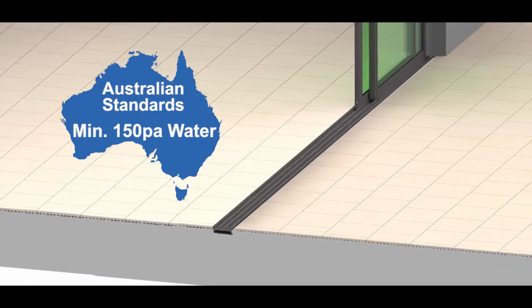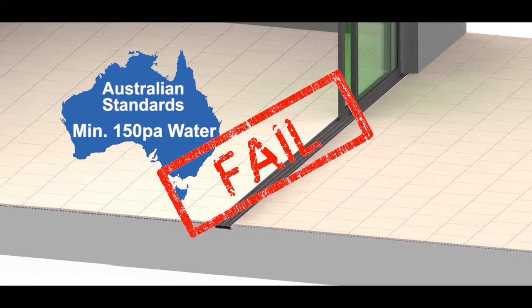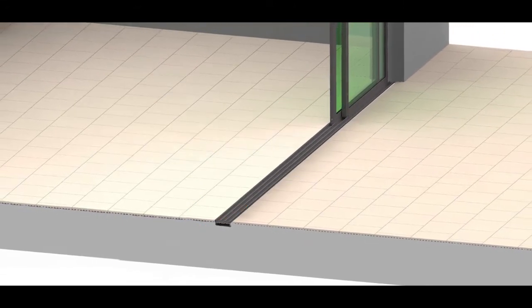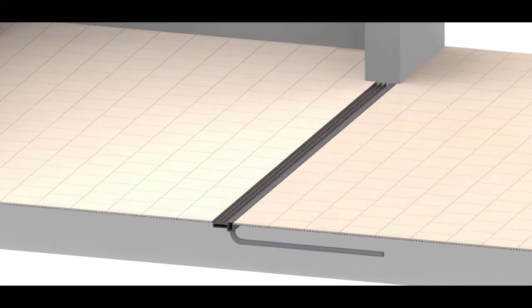Most door and window systems with flush sill thresholds fail to meet the required water penetration resistance level of the NCC, forcing the builder to customize a solution to comply, wasting valuable time and money.